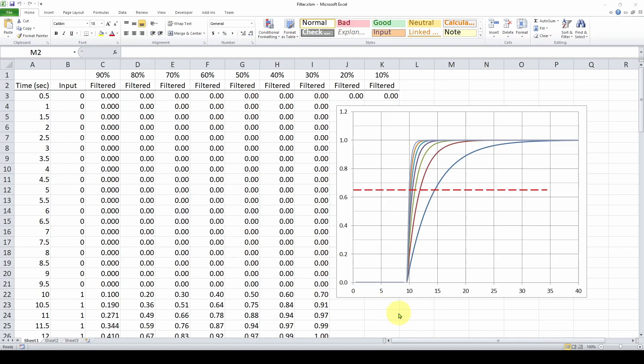So here is an Excel spreadsheet giving an example of using different values in your filtering. Instead of 80% trust in the old value and only 20% in the new value, you can vary those ratios. So you can go like 90% and 10% or 80% and 20% or 70% and 30%.